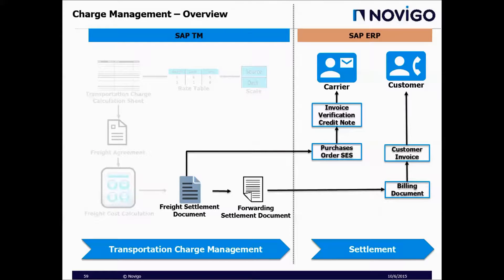This is another integration point between SAP TM and SAP ERP. After creating the freight settlement document, it can be sent to SAP ERP, then the purchase order and service entry sheet will be created, invoice verification will be done, and it will be sent to the carrier. For the forwarding settlement document, it will be sent to SAP ERP, a billing document will be created, an invoice for the customer will be generated and sent to the customer — this is the process of settlement.